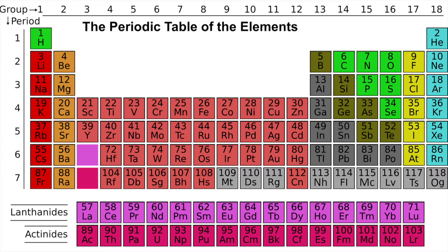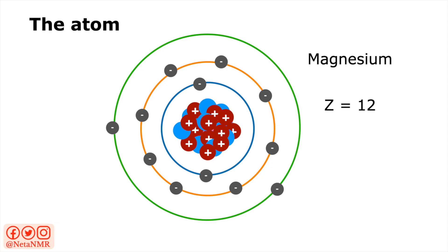Going back to the periodic table, we see that the further we go in periods and down the groups, the higher the atomic number — so we have to add more and more protons in the nucleus and more electrons surrounding it. Let's have a look at one more element: magnesium, with an atomic number of 12, in the third row, second group. That means magnesium has 12 protons in the nucleus, so we add 12 electrons in the shells — 2 electrons in the first shell, 8 electrons in the second one, and 2 more electrons in a third shell.